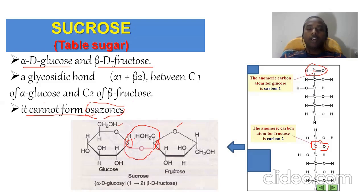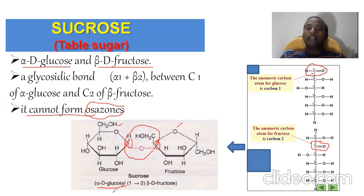The official name of sucrose is alpha-D-glucoside 1 to 2 beta-D-fructose. This is the structure of sucrose, which is a non-reducing sugar. We also call it table sugar — what we use in cooking is this sucrose.